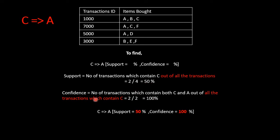Now, what is confidence? The confidence is the number of transactions which contain both C and A out of all transactions which contain C. I have got 2 transactions which contain C. We need to identify the number of transactions which contain both C and A: ABC has A and C, ACF has A and C. So it is 2 by 2, which is 100 percent. When C implying A comes into picture, the support is 50 percent and the confidence is 100 percent.